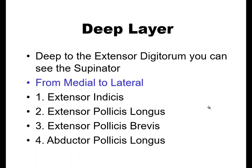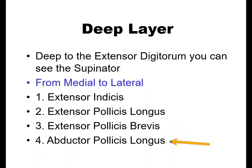Then we have the deep layer, deep to the extensor digitorum. From medial to lateral: extensor indicis, which extends the index finger; then extensor pollicis longus; extensor pollicis brevis; and abductor pollicis longus. The thumb has many muscles because it has a large range of motion and can do a lot of things.